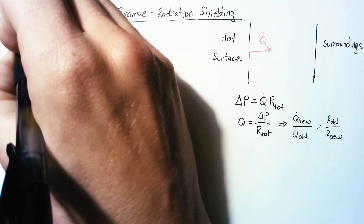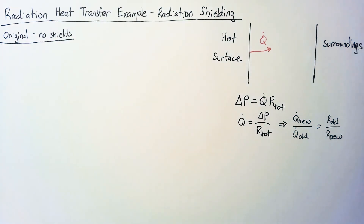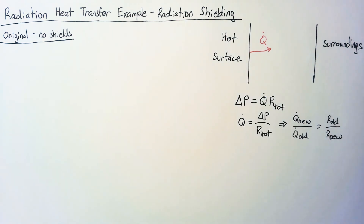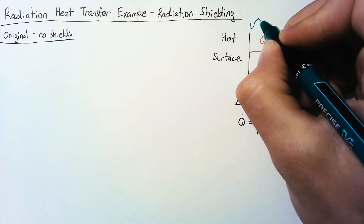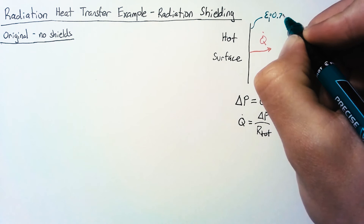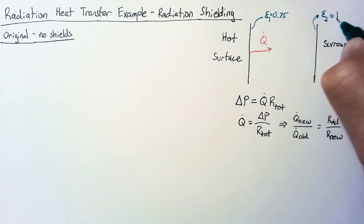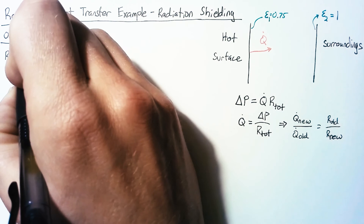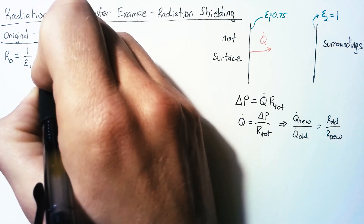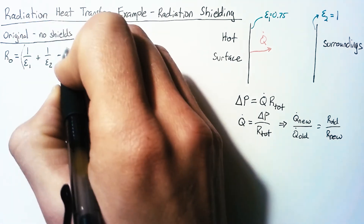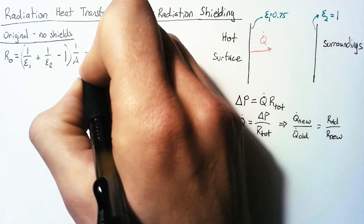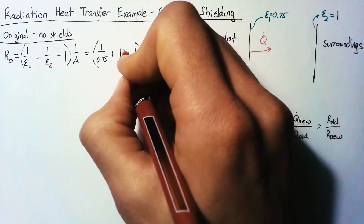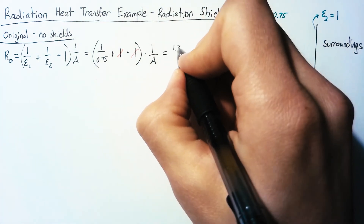Let's figure out what the original resistance is. We need to know the emissivities of the surfaces — we don't need the temperatures because those don't factor into the resistances. Our original emissivity for surface 1 is 0.75, and the surroundings act like a blackbody with epsilon 2 equal to 1. So our original resistance is (1/ε₁ + 1/ε₂ − 1) × (1/A), which gives (1/0.75 + 1/1 − 1) × (1/A). The ones cancel, giving a final value of 1.33/A.